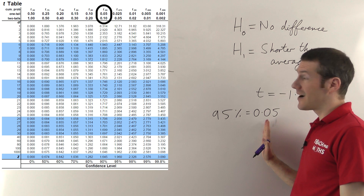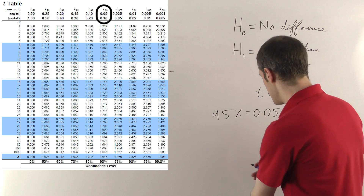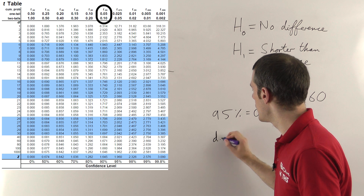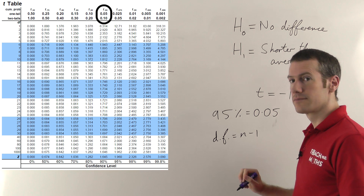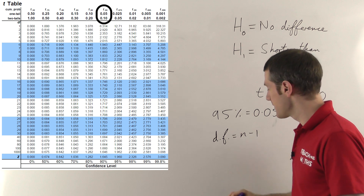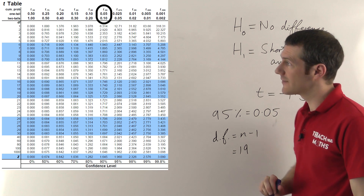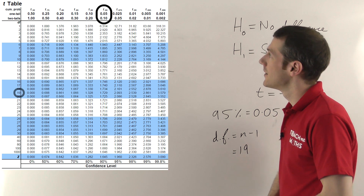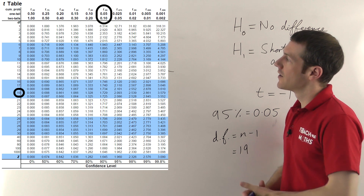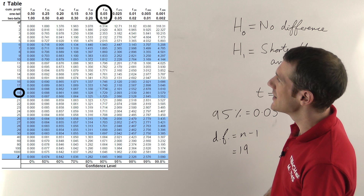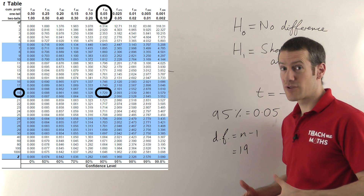Starting at the 0.05 column, we read down until we get the number of degrees of freedom. For a one-sample t-test, degrees of freedom is n minus 1. With n equal to 20, degrees of freedom is 19. Reading down the left-hand side to 19, at the 0.05 one-tail column, the critical value is 1.729.